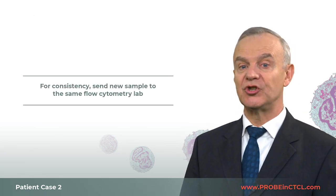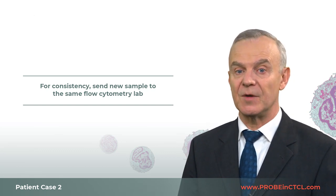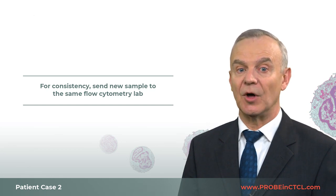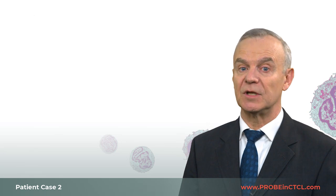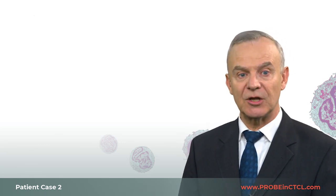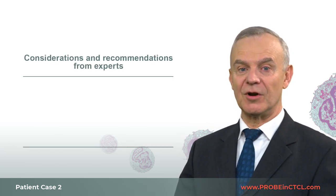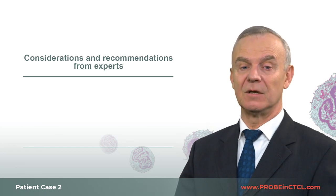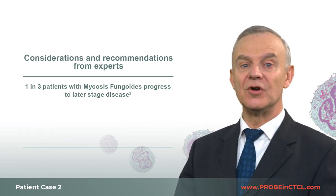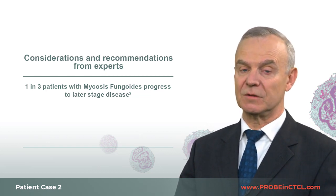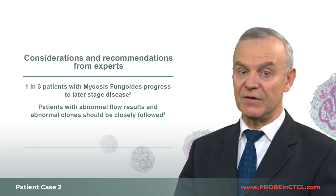For consistency, I would send the blood sample to the same flow cytometry lab that made the initial diagnosis to minimize variability due to differing methodologies and antibody panels across centers. Because this patient progressed to a higher stage, in my experience, it's important that she continue to be routinely monitored with flow cytometry to check for further signs of progression. Keep in mind these clinical considerations: one in three patients with mycosis fungoides progresses to later stage disease, which can affect skin, lymph nodes, blood, or other systemic compartments. Patients with abnormal flow and abnormal clones must be closely followed, because they may indicate evolving Sézary syndrome.